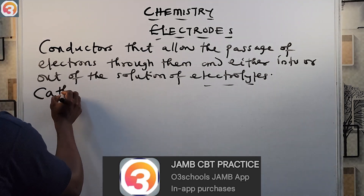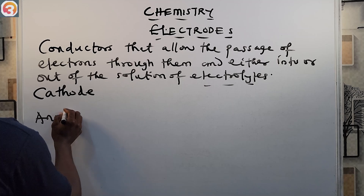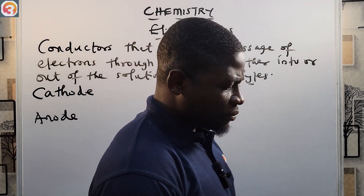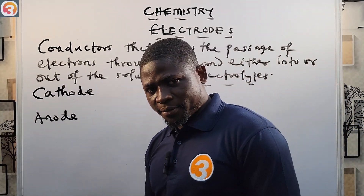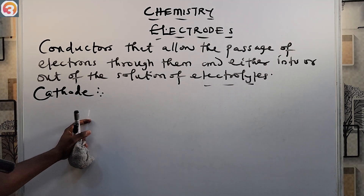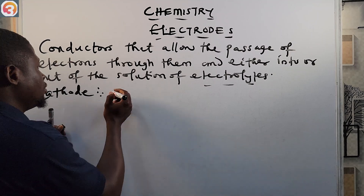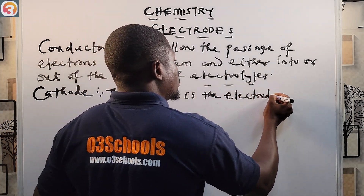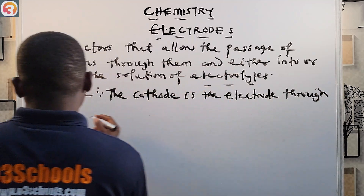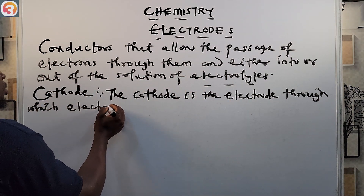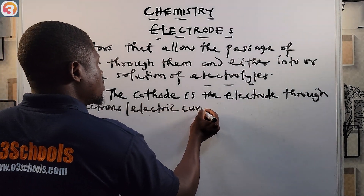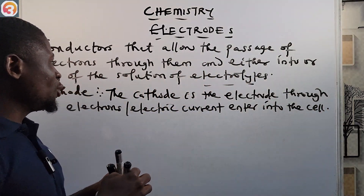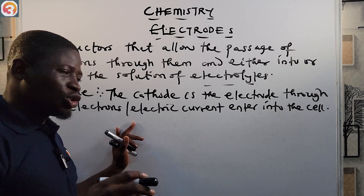So we are going to look at two types of electrodes: the cathode and the anode. The cathode is the electrode through which electrons or electric current enter into the cell.